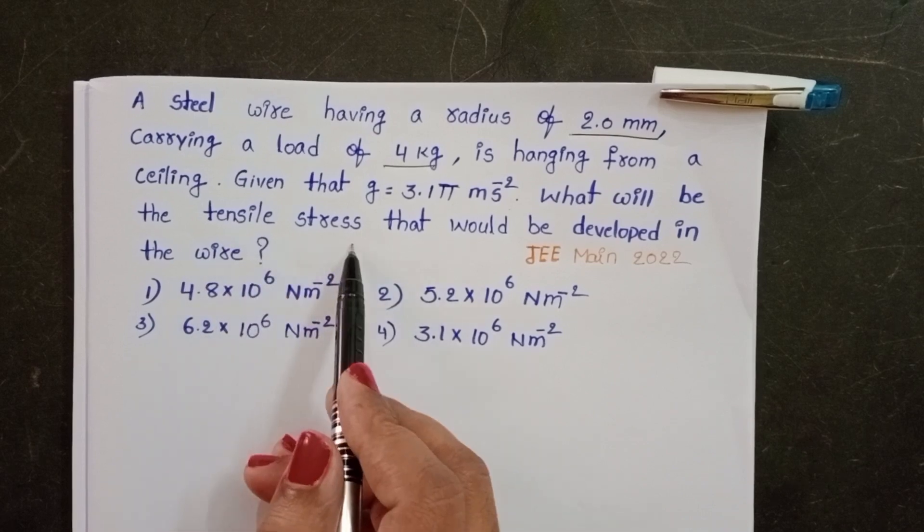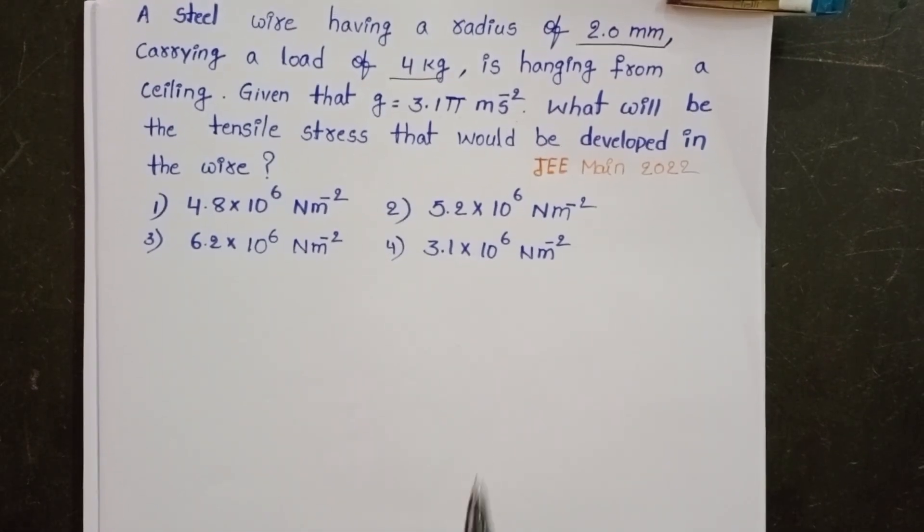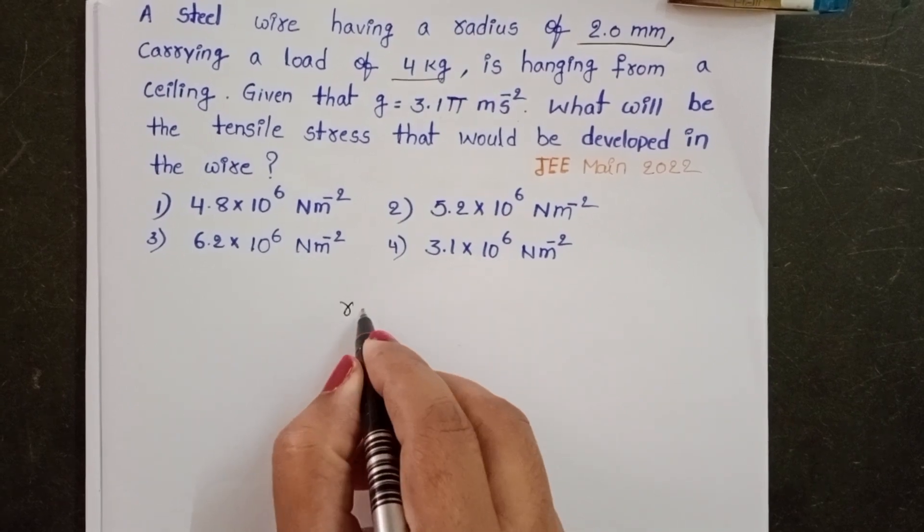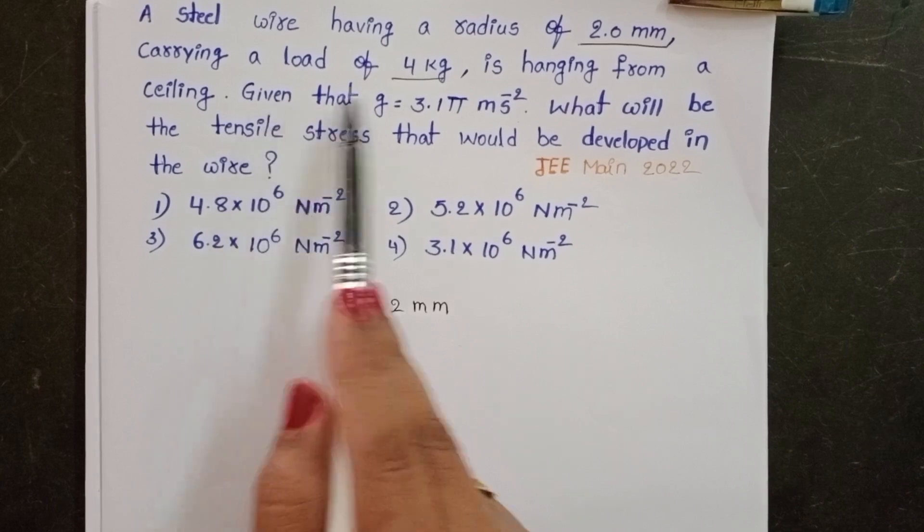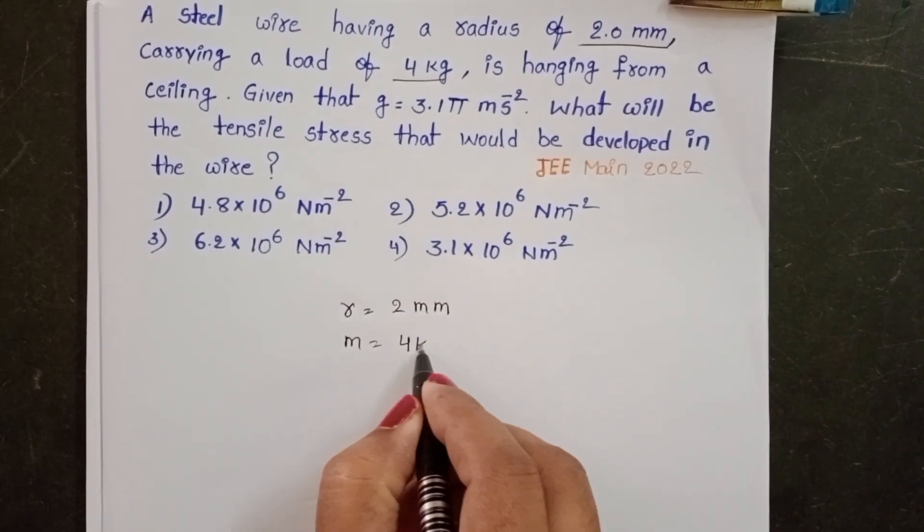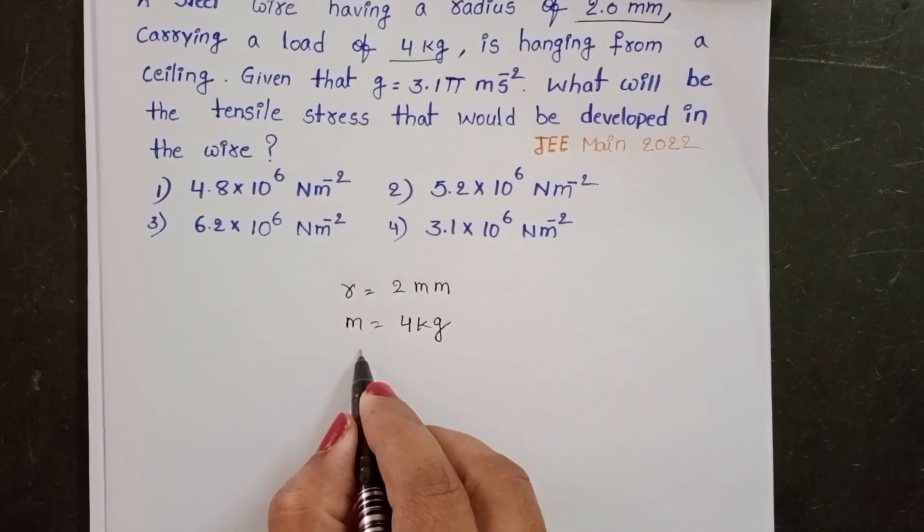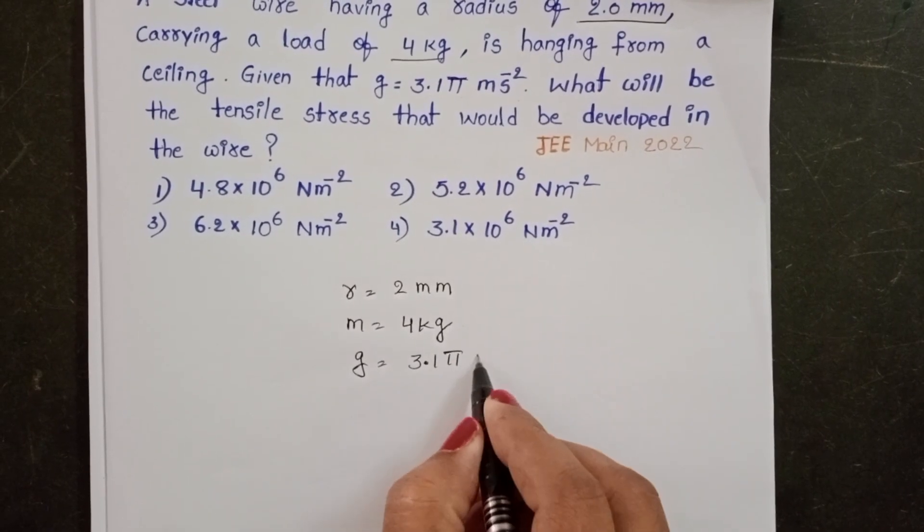What will be the tensile stress that would be developed in the wire? Given radius of the steel wire is 2 mm, it carrying a load of mass 4 kg, and given G value is 3.1 pi meter per second square.